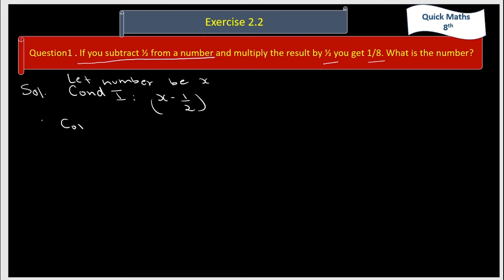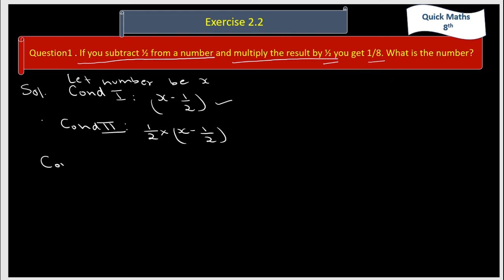Second condition: multiply the result by 1 by 2. Our result is condition first, so we multiply that result by 1 by 2. Finally, you get 1 by 8. So the answer we get is 1 by 8.